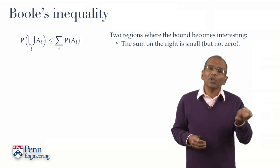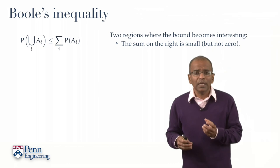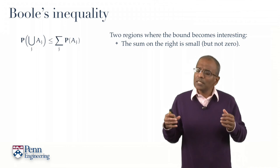The first region is obvious. What if the sum on the right is a small number? Well, that'll force the probability of the union to be a small number. In such regimes, the inequality is not grossly bad, and one can imagine that it might well be useful. And it is.